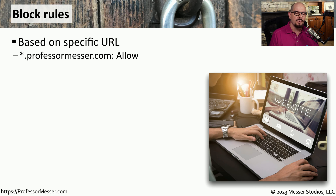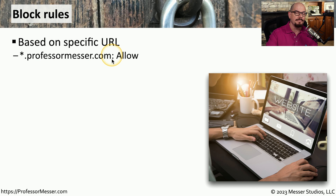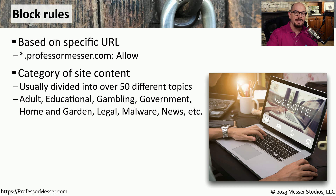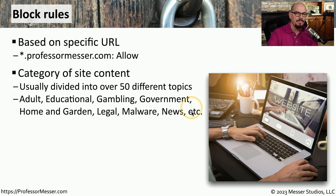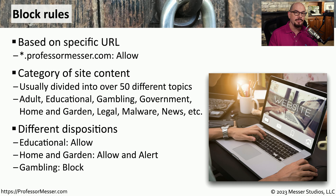These content filters and URL filters are designed to block based on a fully qualified domain name. You could configure a block filter with a specific fully qualified domain name, such as professormesser.com. You could also set these rules based on a category of website. Most URL filters have over 50 different categories of sites, including adult, educational, gambling, government, home and garden, and many more. This allows you to set some very granular controls over what types of sites might be allowed and what sites might be blocked.